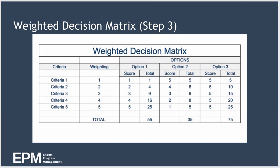And finally, in step three we simply add up our total score for each option. As you can see here, option three is the best as it has the highest score of 75 versus option one with a score of 55 and option two which scores 35.